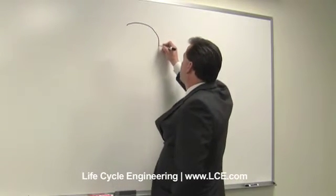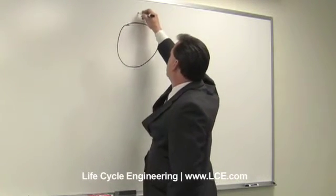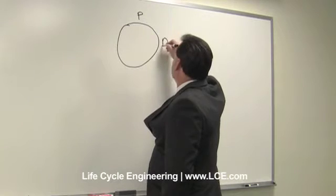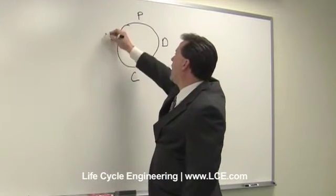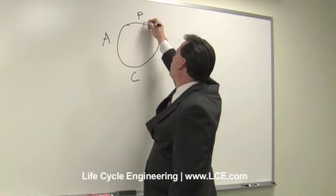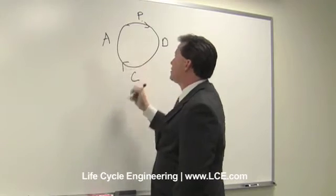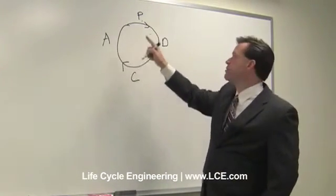There are 28 elements and a plan, do, check, act cycle. This is something that we're all familiar with, I'm sure, and it's just that model of continuous improvement.